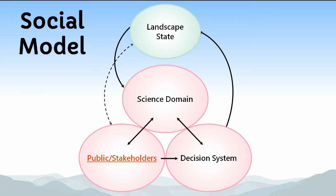Lastly, we have the decision system. This generally resides within government, but it can occur within organizations as well — say, a forestry company developing a management plan. Decision-makers have several tasks. First, they need to distill broad values into discrete, measurable working objectives. Next, they need to determine which management options are available. And lastly, they need to decide which course of action is best. This generally means grappling with difficult trade-offs among competing land-use objectives. In most cases, we can't get everything that we want.